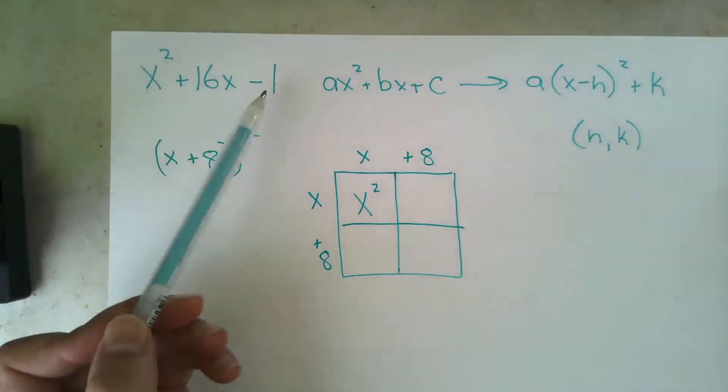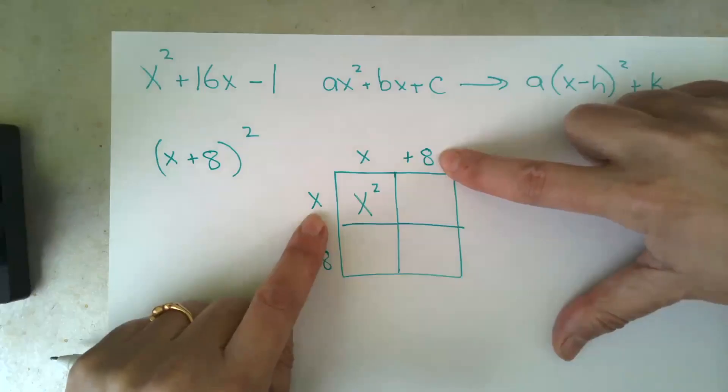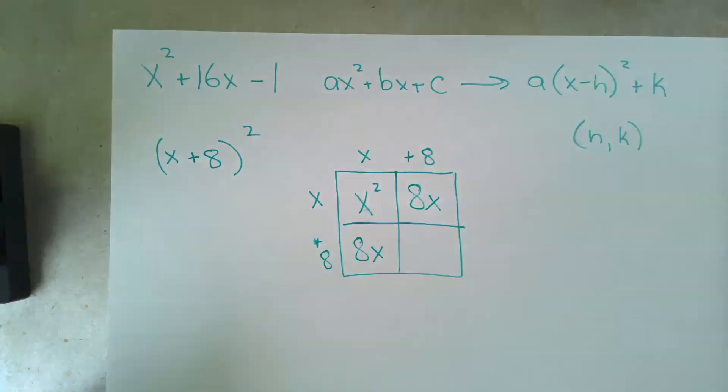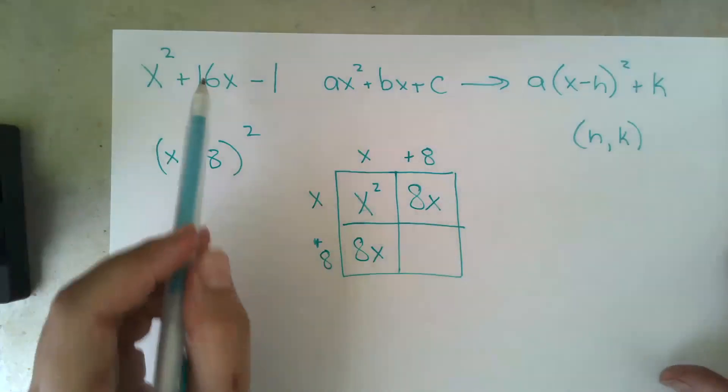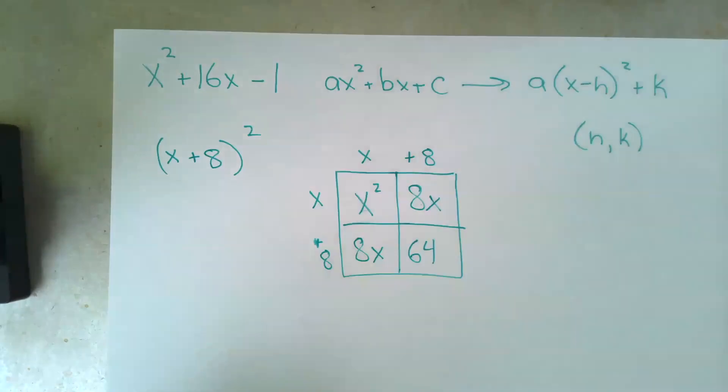Now we just have to complete it to make sure that we're keeping the equation the same. Because watch this, when we finish the multiplication matrix, x times 8 is 8x, x times 8 is 8x, and there's our 16x when we add them. But finally, 8 times 8 is 64.